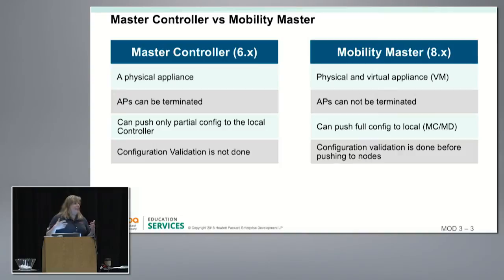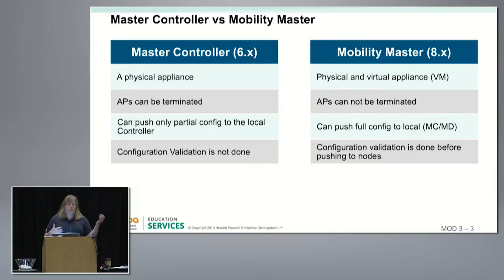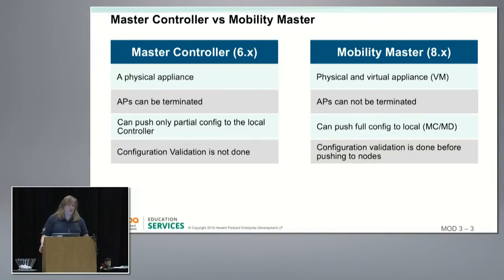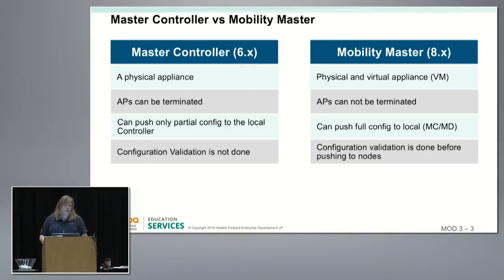That has been changed in AOS 8.x — my presentation is based on 8.0.1, with additional features coming in 8.1 in late spring. A huge difference is that we can now push all parameters down from the master controller. In 8.x that master controller has a new name: Mobility Master, referred to as MM. Additionally, when configuration is pushed down to the local controllers it is validated — there is syntax validation to ensure the commands being pushed are correct.